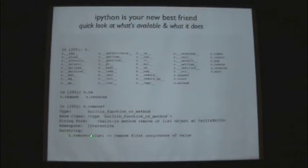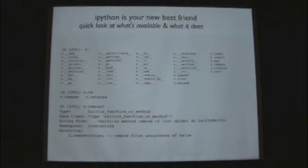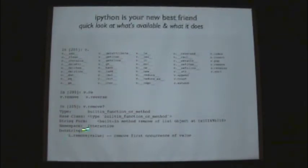For third-party code that's used often, you'll see very descriptive documentation with use cases and examples. You can also use help(v.remove) with parentheses to get the same thing. If you type 'v._' and Tab, newer Python shows you all the magic stuff underneath.